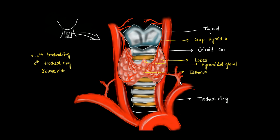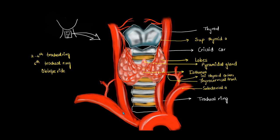The inferior thyroid artery is a branch of the thyrocervical trunk, which itself is a branch of the subclavian artery. The subclavian artery is a branch of the aorta on the left side, and on the right side it is a branch of the brachiocephalic artery. So the inferior thyroid artery is a branch of the thyrocervical trunk of the subclavian artery.